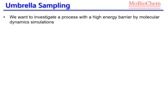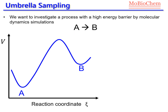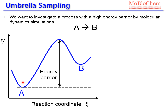Let's suppose we want to investigate a process with a high energy barrier by molecular dynamics. For example, we want to simulate the reaction A to B, and this is the potential energy profile along the reaction coordinate which drives the system. As you can see, there is a high energy barrier for going from A to B. If we run conventional molecular dynamics starting in the region of the reactants, the system will be trapped there forever because it's very unlikely that the system is able to jump this very high energy barrier.